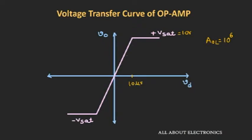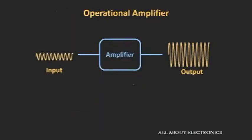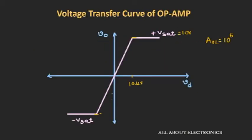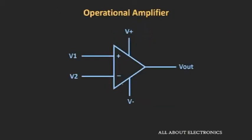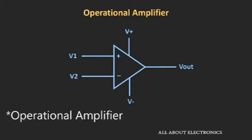Whenever we want to use this op-amp as an amplifier, we need to use it in the linear region, so that the input and output have a linear relationship. But whenever we use this op-amp in open-loop configuration, this linear range is very small.